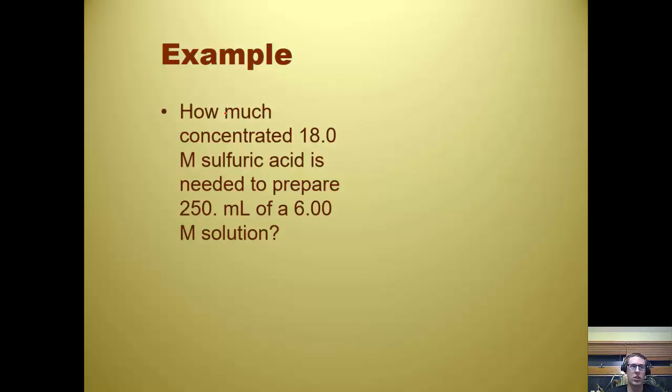So I can ask the question, how much concentrated 18 molar sulfuric acid is needed to prepare 250 milliliters of a 6 molar solution? So we can use M1V1 equals M2V2. And our M1 is our starting concentration. It's always going to be higher in this case. So we have 18 molar, 18.0 M, times V1, which we don't really know. So that's our variable. Equals M2. We know 6.00 molar, and we do know our V2. It's 250 mL.